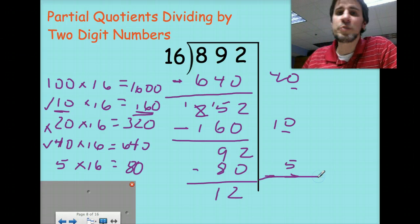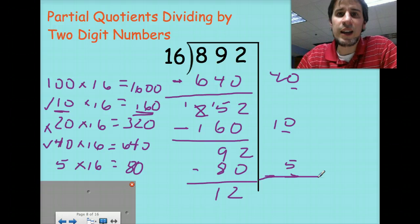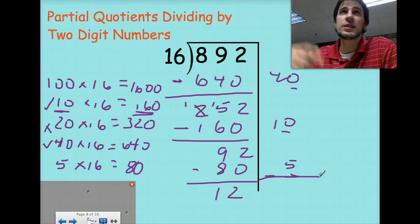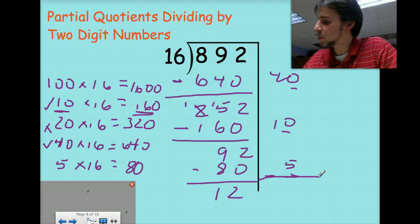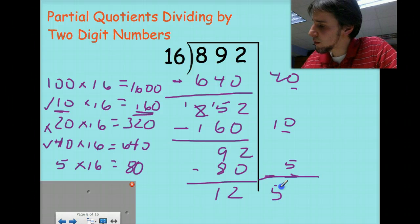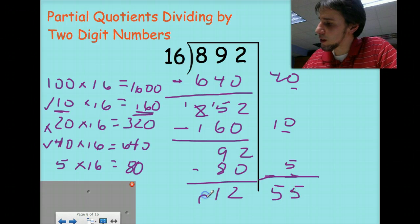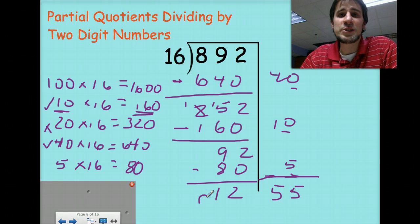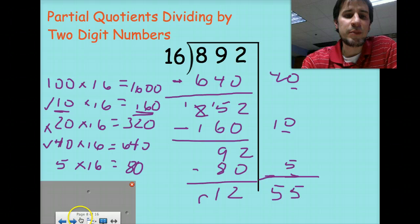And this is the huge benefit of doing partial quotients. I didn't have to go through all this stuff. So 55 with a remainder of 12 is your answer. So give this problem a try.